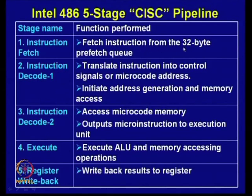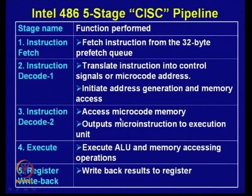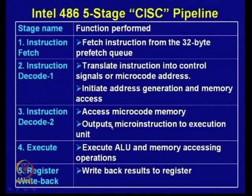In that same decode 1 stage, address generation is also initiated and memory access is initiated. Instruction decoder 2 accesses microcode memory and outputs microinstructions to the execution unit. Instructions are converted into micro-operations — microcode memory is accessed and micro-instructions are output to the execution unit. Then those micro-operations are ultimately executed.